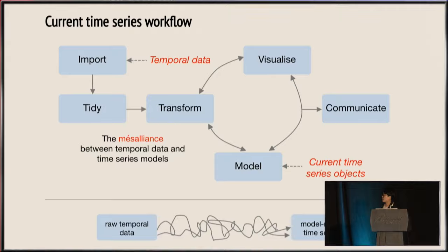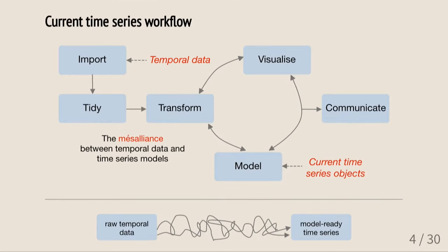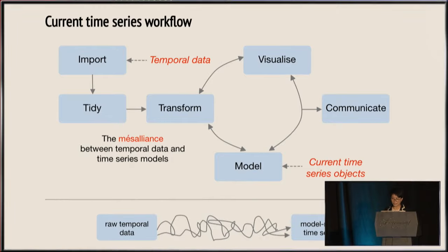The current time series objects in R are model-focused. By saying model, I mean it not only includes statistical models, but also forecasting, decomposition, autocorrelation function, and other time series tools. All the methods or functions expect matrices as inputs. But the data arrives at the right beginning of this process — it rarely comes in matrix form. We have to write so much ad hoc code to get the data into a time series model-ready object. It is a pain because of the mismatch between temporal data and time series models.